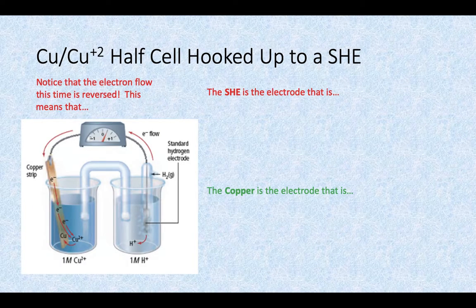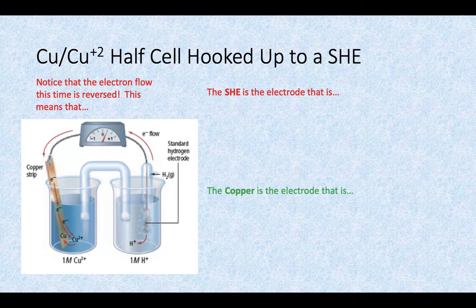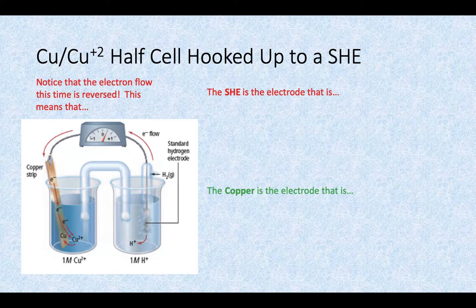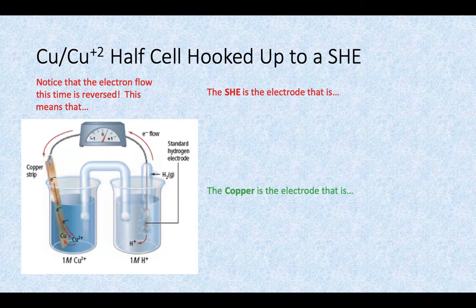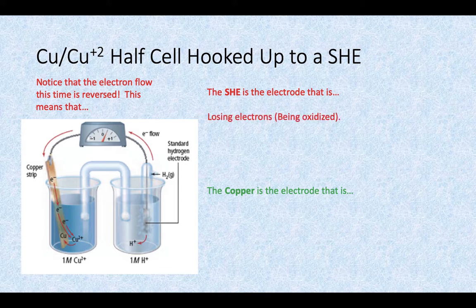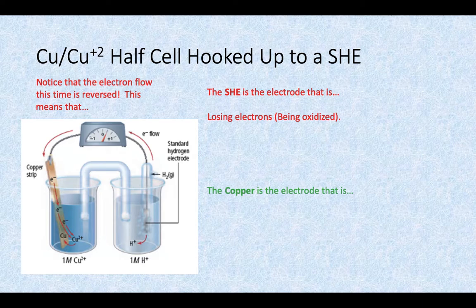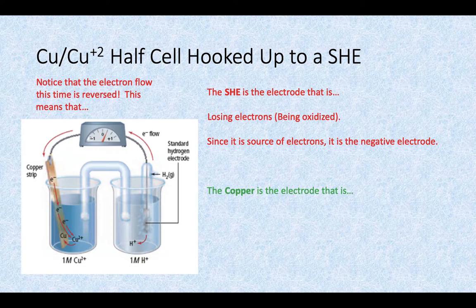Let's look at another half reaction hooked up to the SHE. Notice how the electron flow this time is reversed. Now the electrons are leaving the SHE on the right hand side and going towards that strip of copper. So now the SHE is the one that's losing the electrons. So the SHE is being oxidized. If it's being oxidized, that means it is the source of the electrons. The electrons are leaving the SHE, so we say that's the negative electrode, the anode.